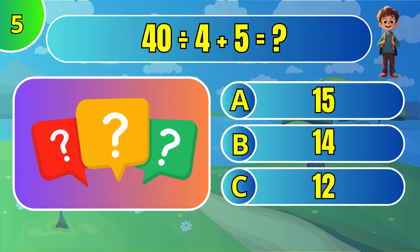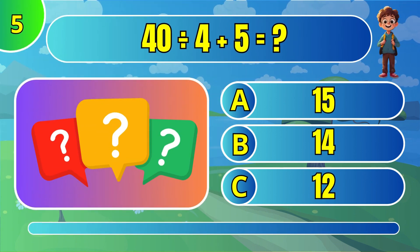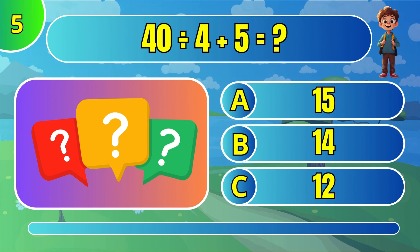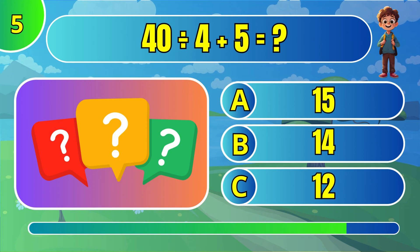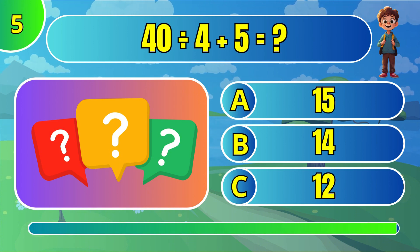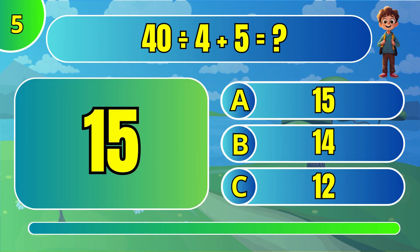What is 40 divided by 4 plus 5? The answer is 15.